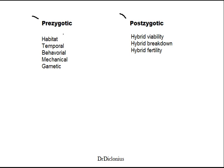Prezygotic barriers. Obviously habitat — if they don't share the same habitat, if they're in different locations, obviously they won't be able to mate.